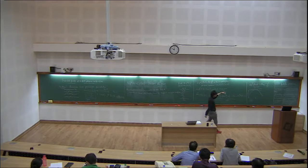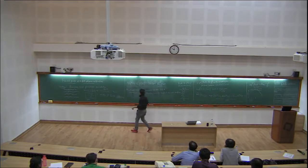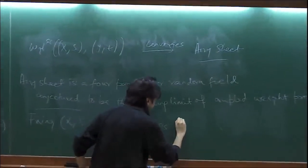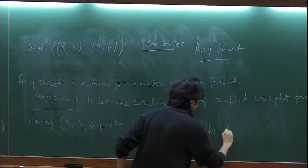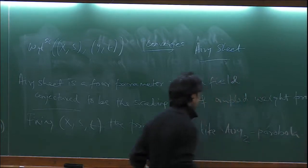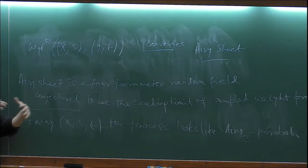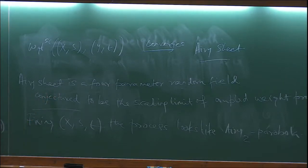What is the covariance structure of this four-parameter field in time and also in space? The known result says: if you fix three of the coordinates X, S, and T, and just vary Y, you again get an Airy process minus a parabola. But now you can ask how these processes are related as you vary X and S and T as well. So the basic question is: can we understand the covariance structure of these coupled profiles?